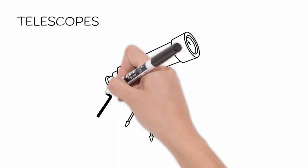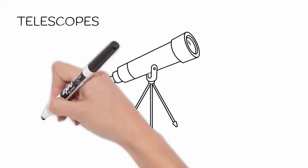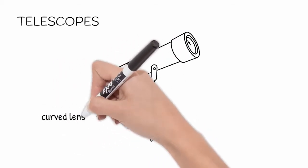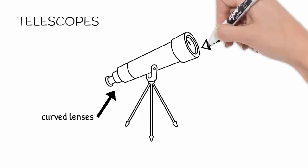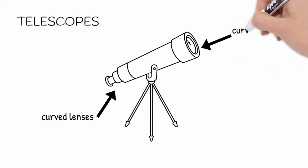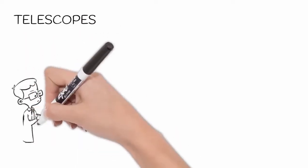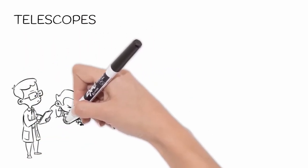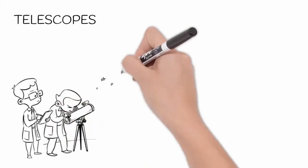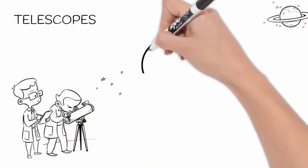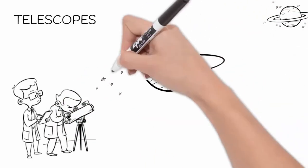A telescope is a device that uses curved mirrors to make far away objects appear closer and magnified. It's sort of like a magnifying glass, but it can be used to make things from outer space appear closer and more magnified.